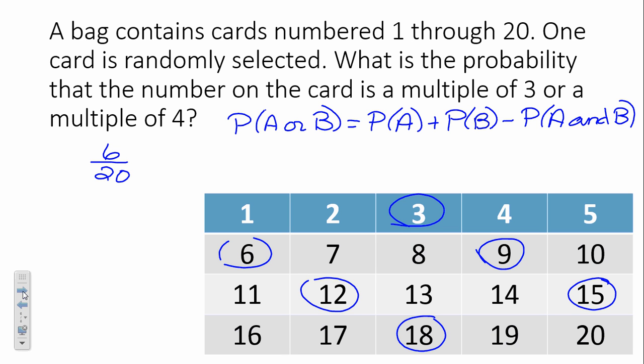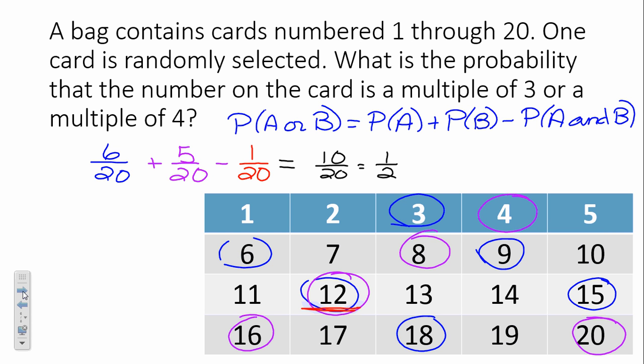Now, which ones are multiples of 4? Yep, counting by 4's now, 4, 8, 12, 16, and 20. How many purple ones did I circle? 5. So, we're adding 5/20. But, what do we have to take away? The overlap. Which one overlapped? The 12. So, we've got to take this guy away. And, our result will be 10 out of 20, which reduces to... So, half of the numbers between 1 and 20 are divisible by either 3 or 4, so that's our probability. Does that make sense? Nothing too hard here, right? Just a lot of vocab again.